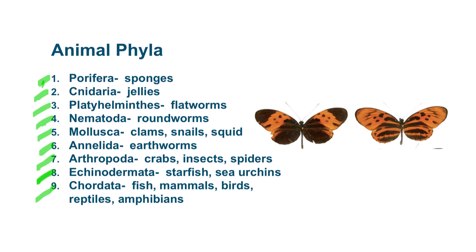So once again, make sure you understand the sequence of the taxa: kingdom, phylum, class, order, family, genus, and species. Go back through this mini lecture if you need a refresher later before you take the test on the different animal phyla and the classification of the cat as an example that can help you remember the order of the taxa.